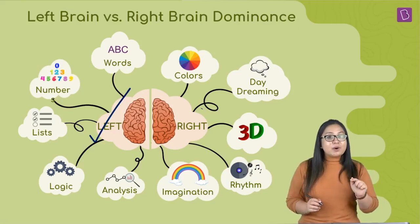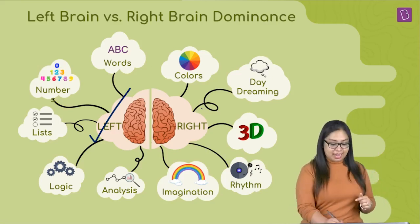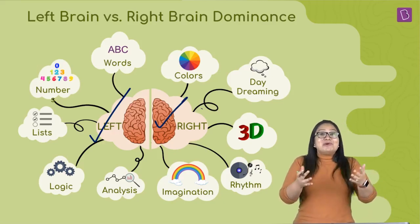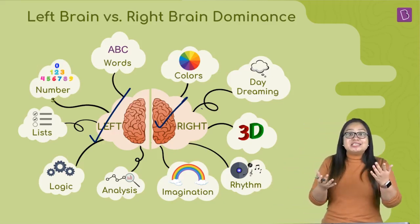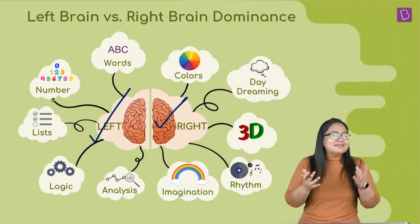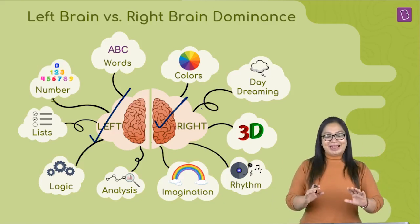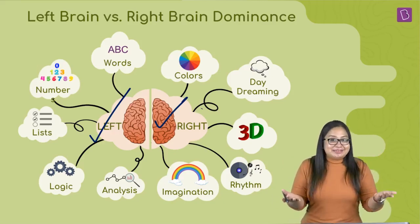But people who are right brain dominant, on the other hand, are more artistic in nature. So, they are more attracted to colors and they are more imaginative, they think in three-dimensional images. And they've got a bit of a tendency to daydream as well. So, that's pretty interesting, right? But you must be thinking, well, what does that have to do with revision?